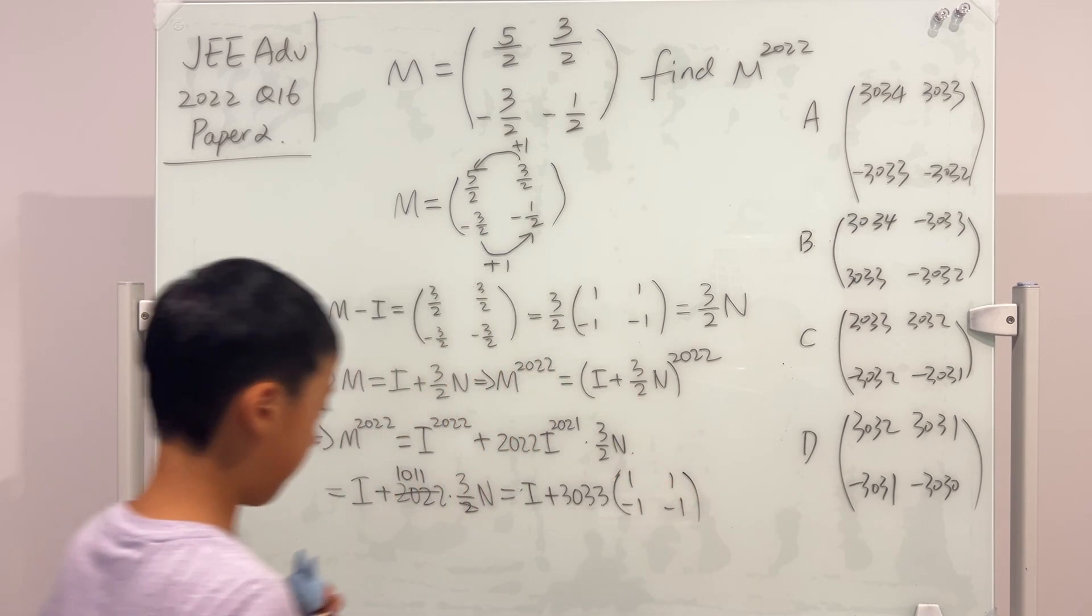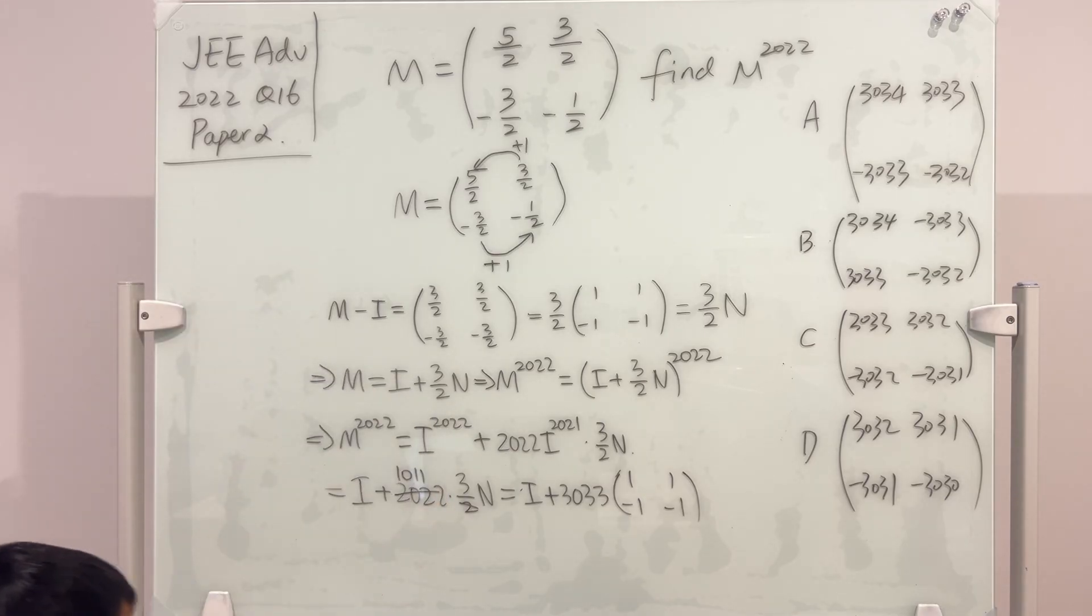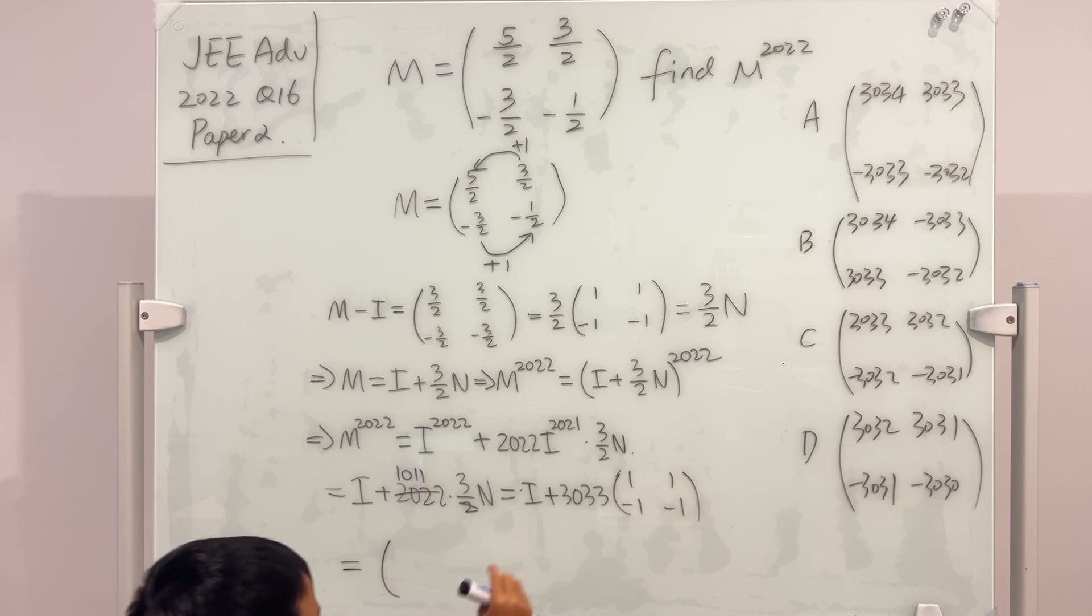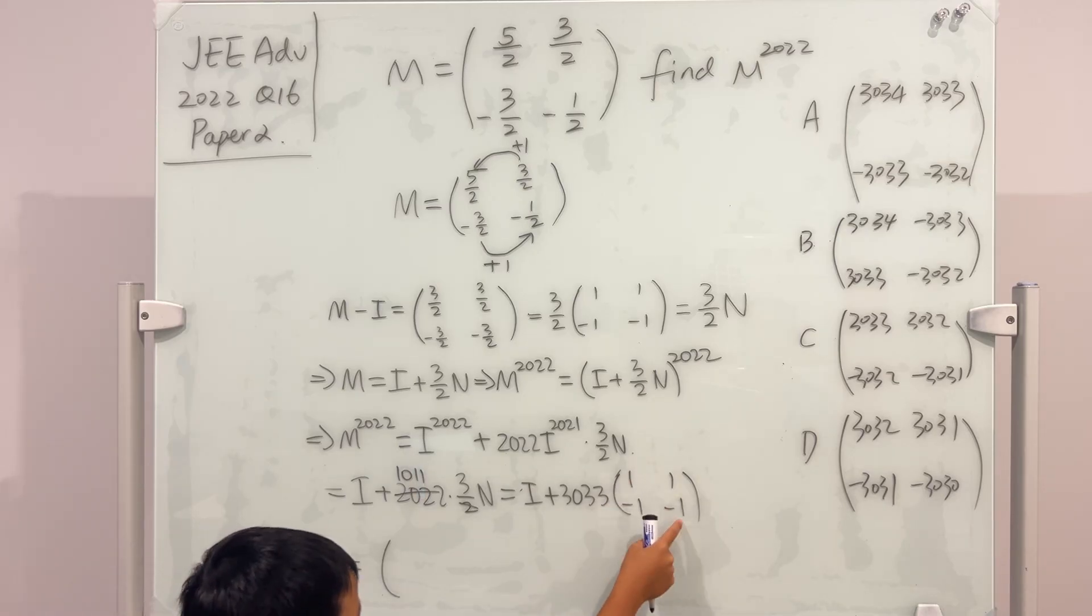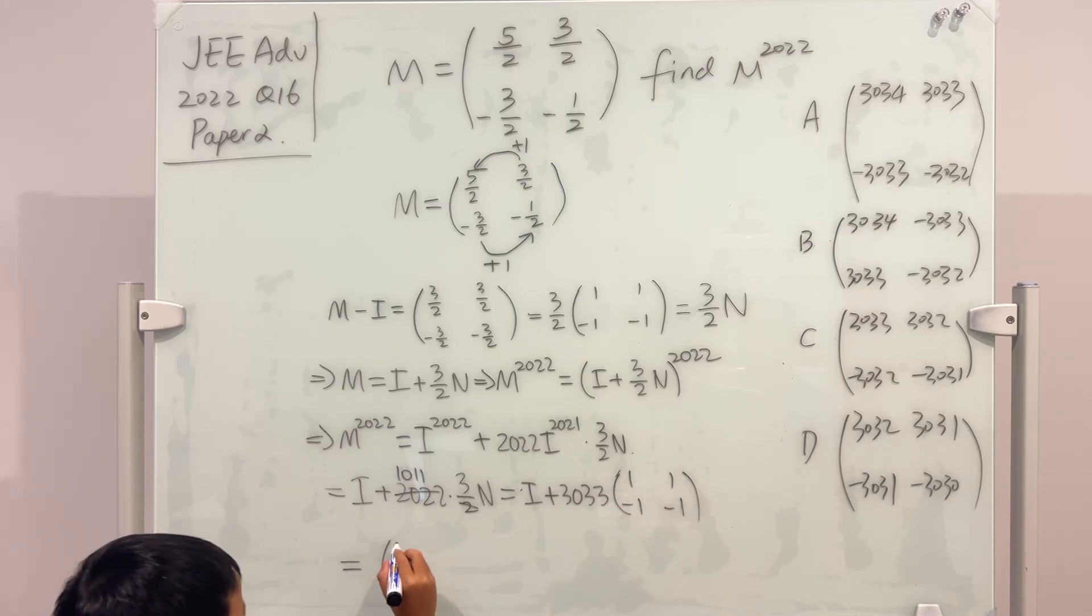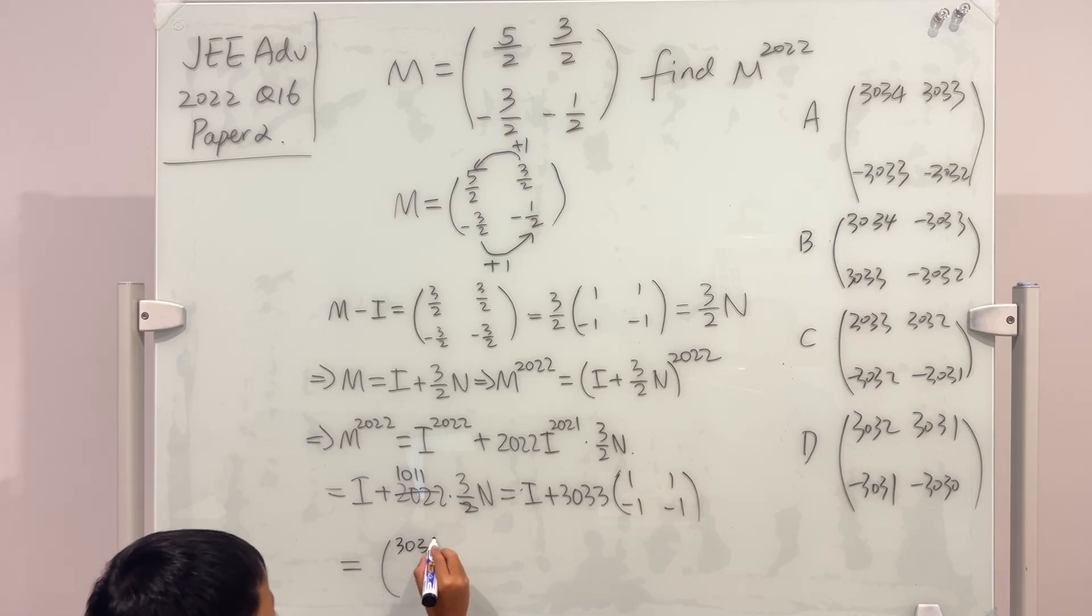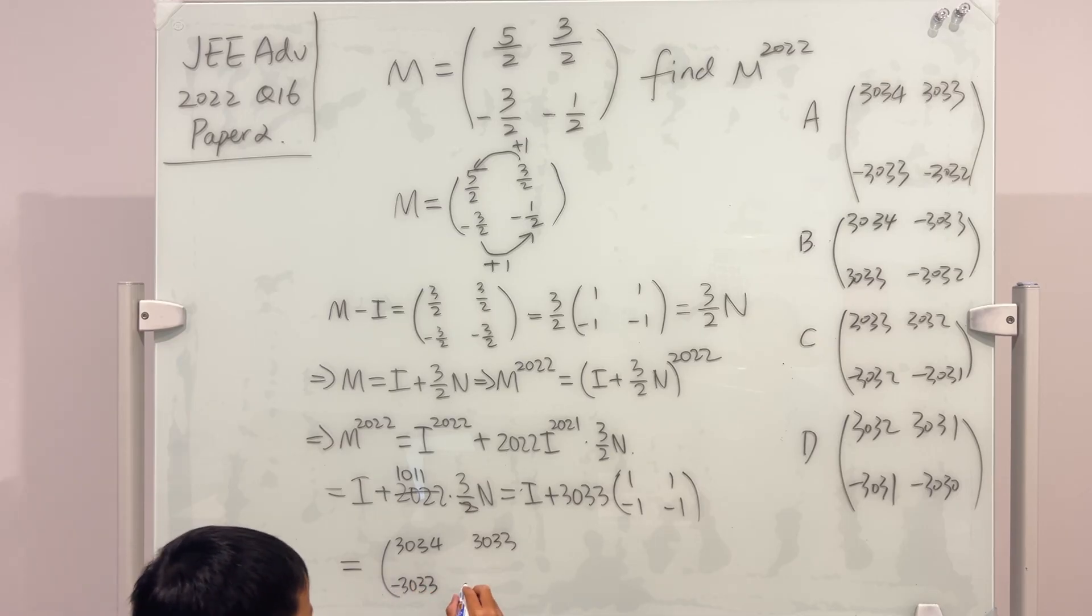So my final answer is, if we didn't have the I, then it would all be 3033s. But now that we have the I, we have to add 1 to this term and this term. So it's 3034, this stays the same, this stays the same, but then we have to add 1 to this term. So it's negative 3032.